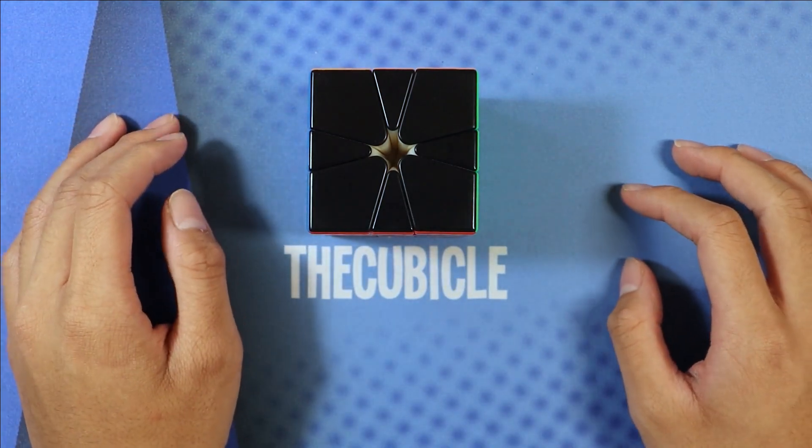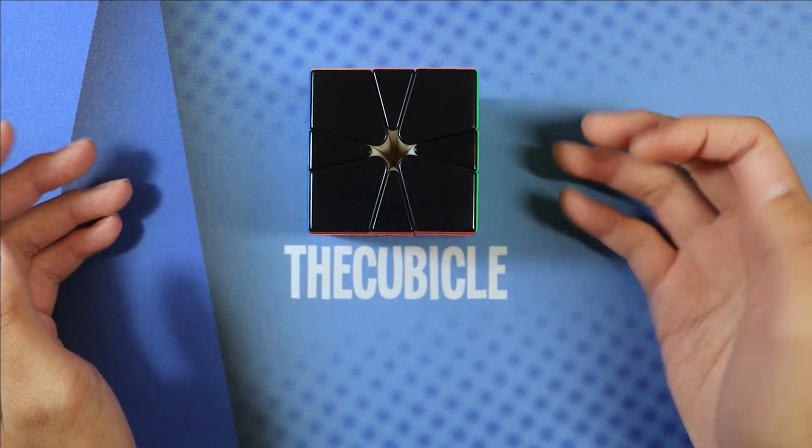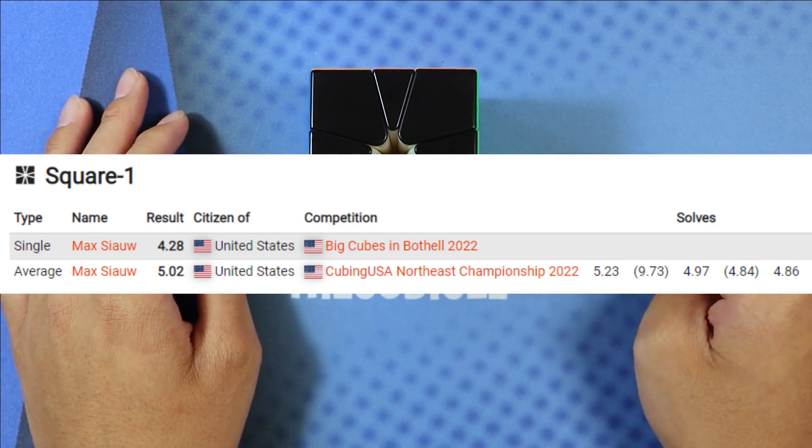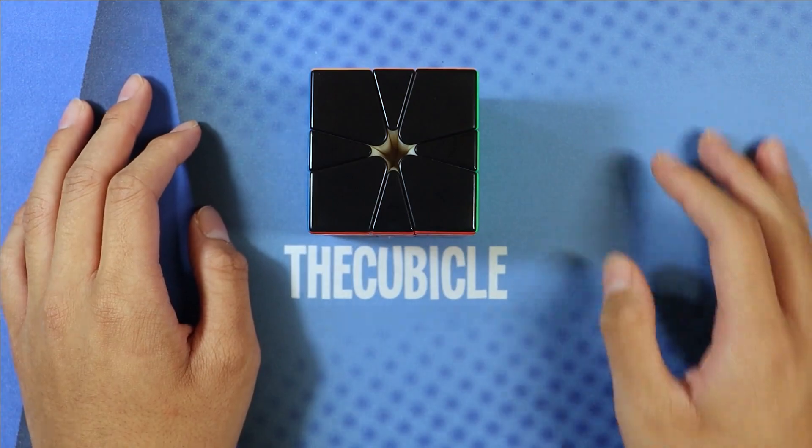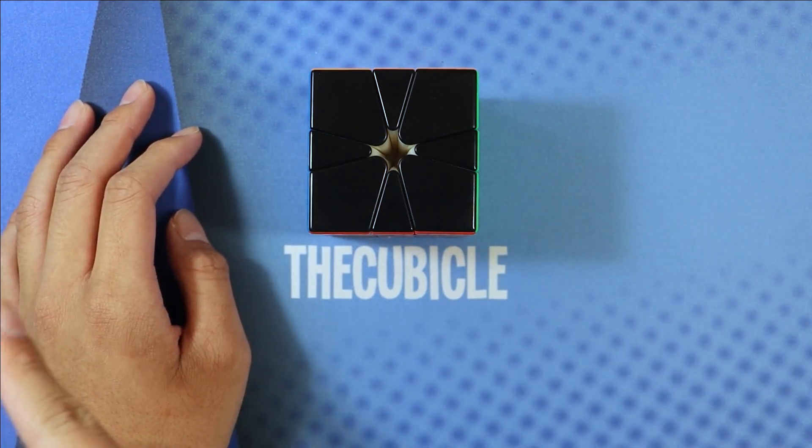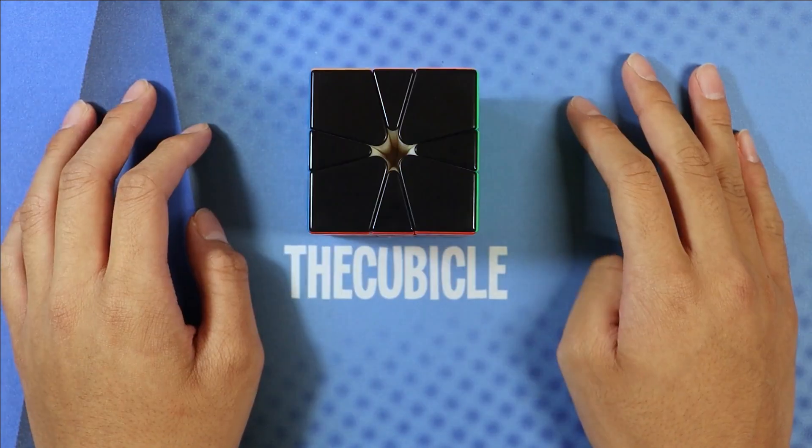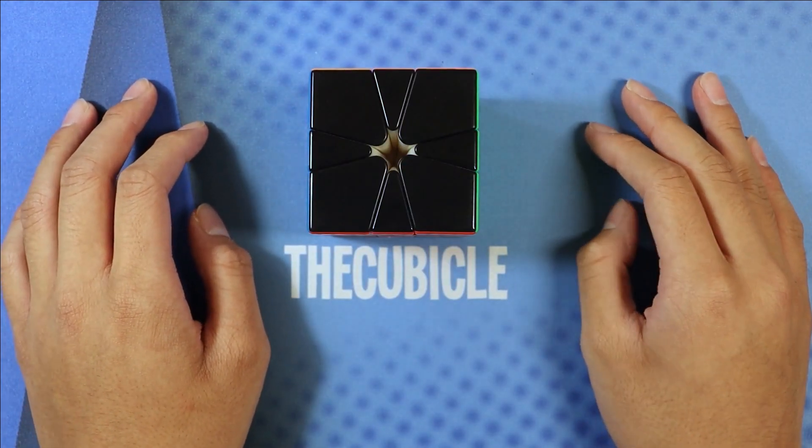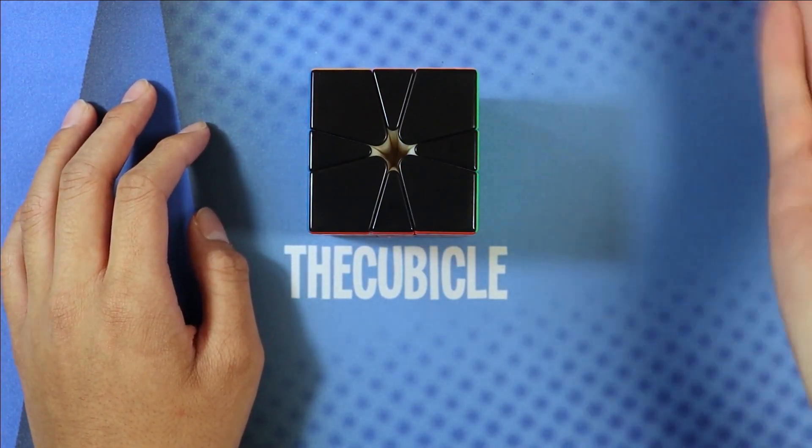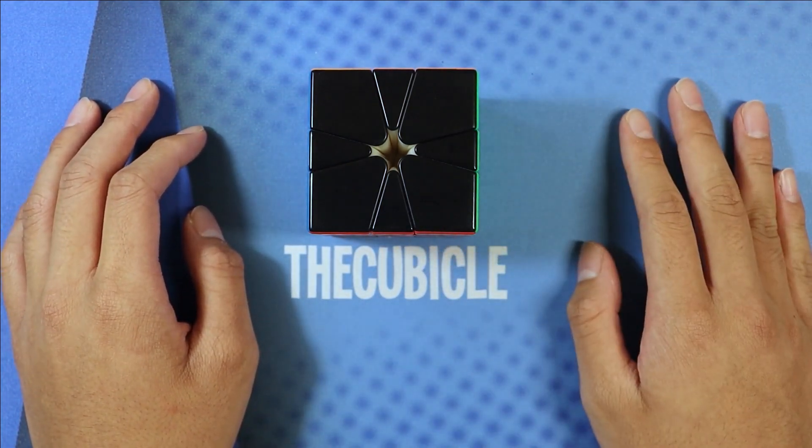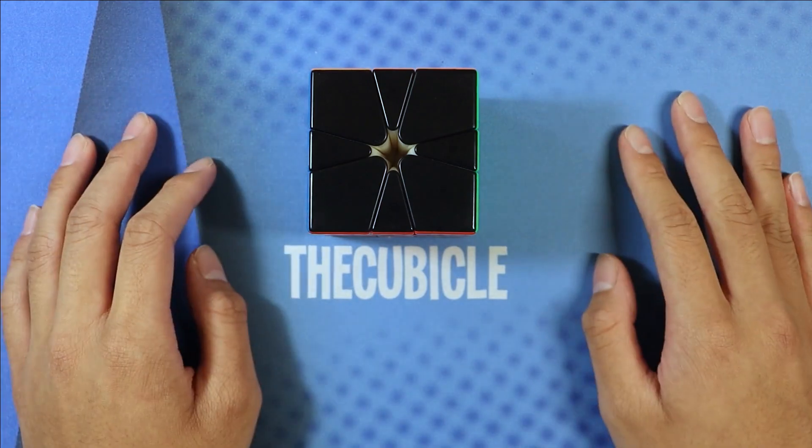Anyways, I'm really happy to finally hold both the single and average world records for Square One, and now when you go to my profile and go to Square One, you can just see an entire row of red ones, which I think is really cool. It's also my first time holding two records simultaneously because up until now, every time I've set a record, I had already lost my previous one, so that's another cool thing.